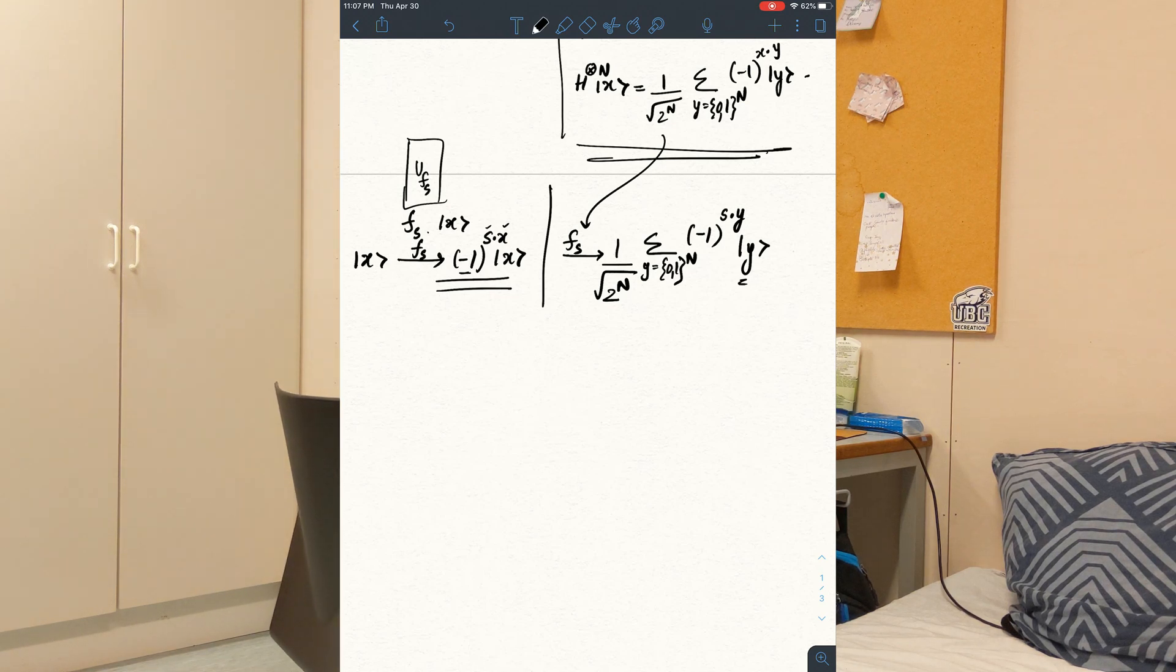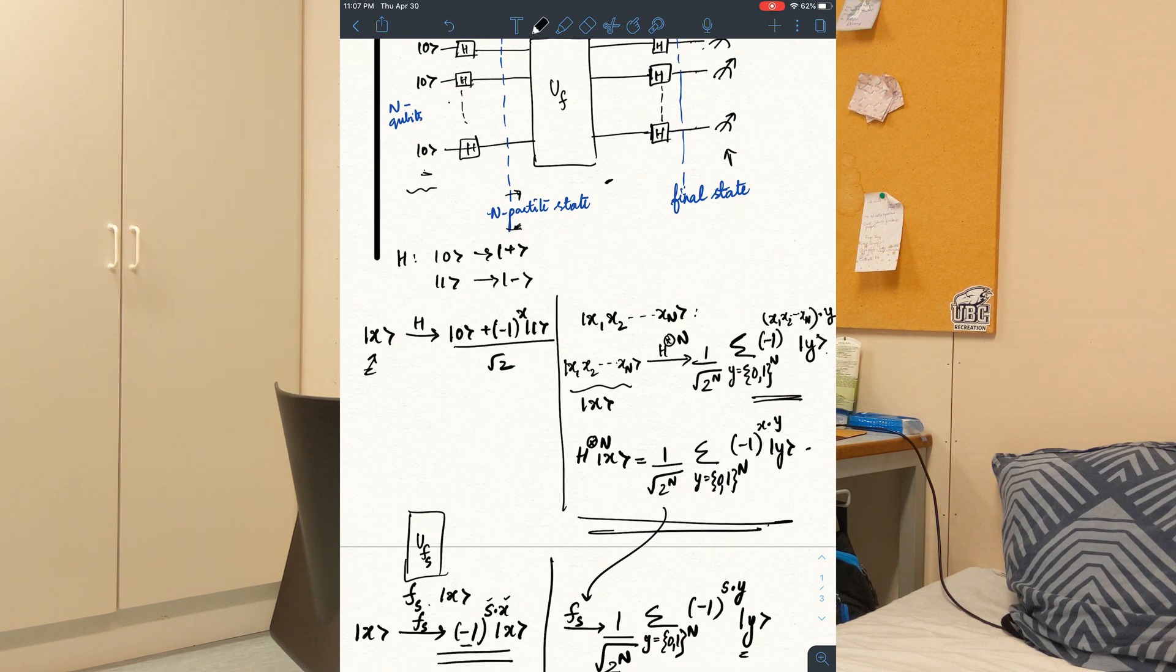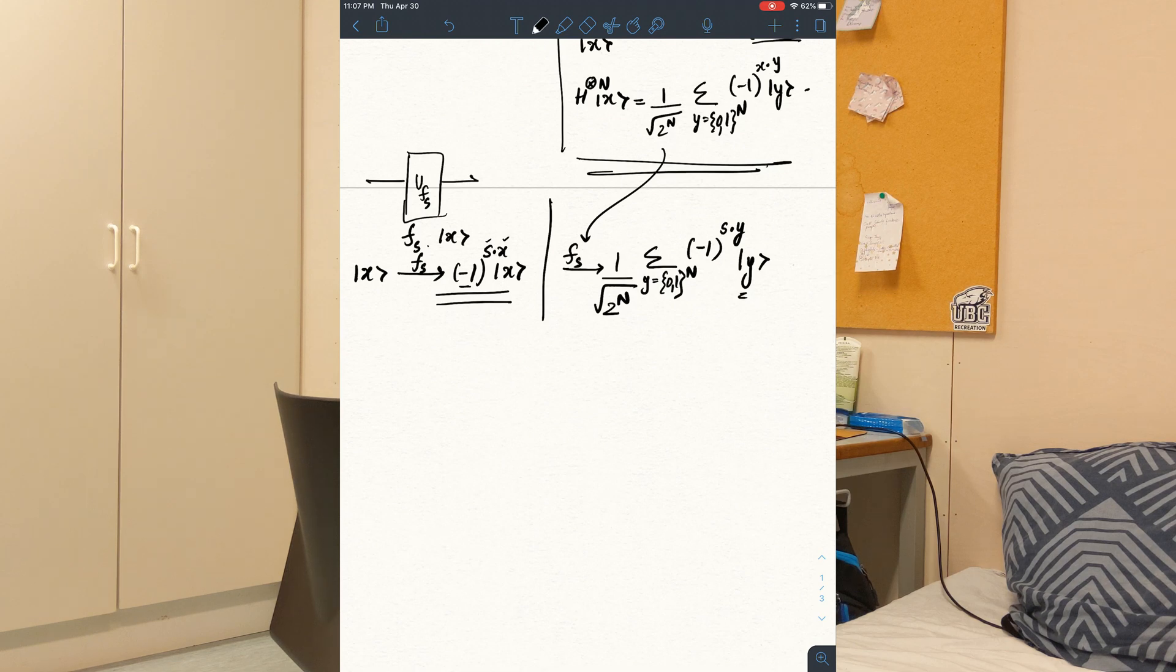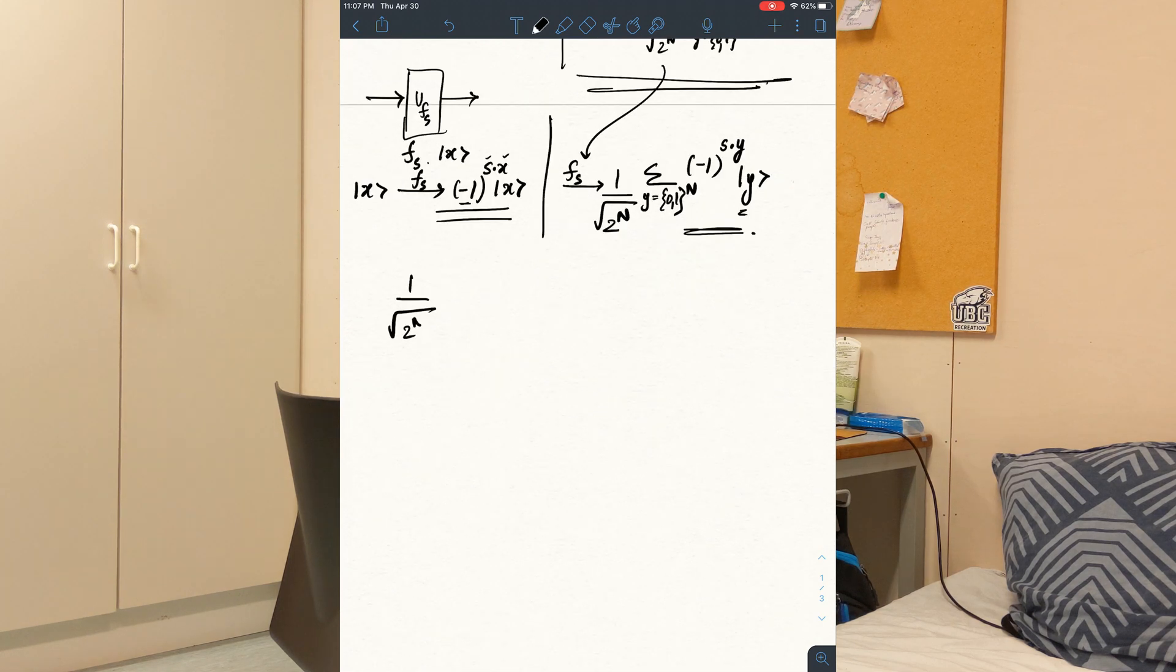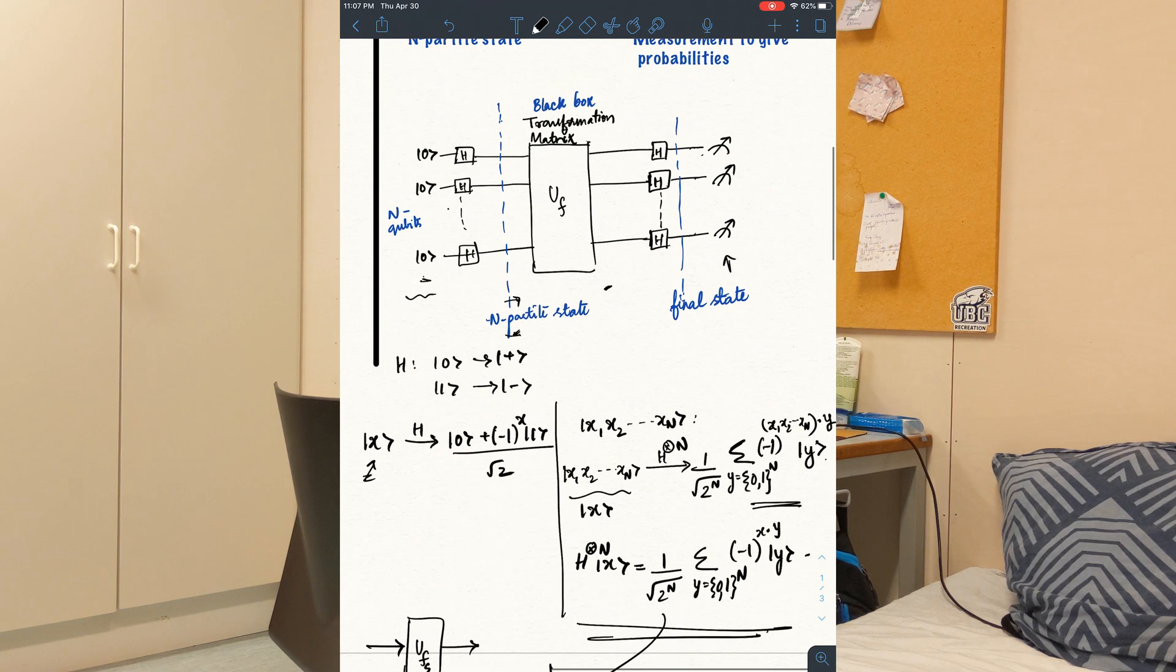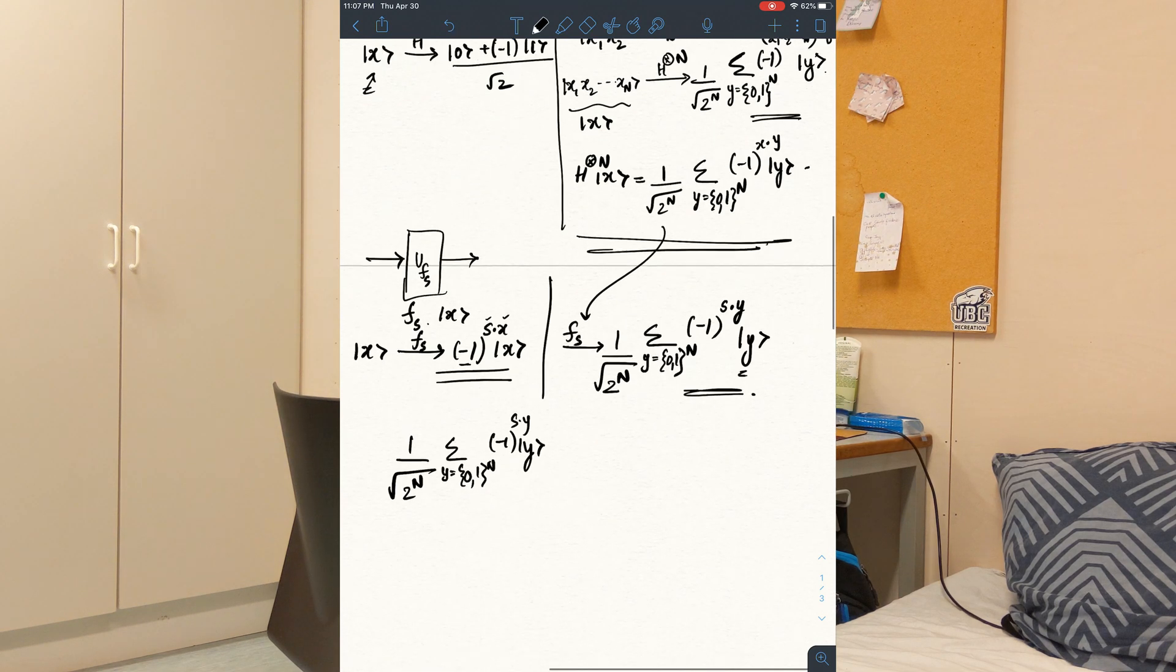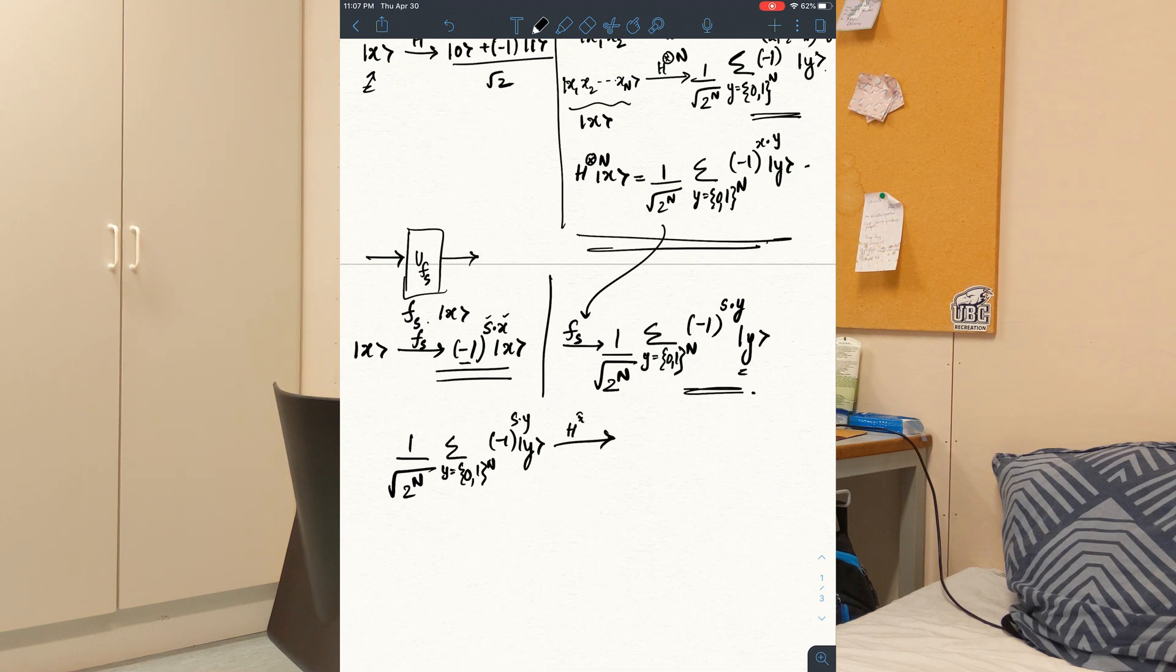This is at the end of the unitary transformation that we have. This is the state that we have just before we apply the Hadamard gates. Now when we apply these Hadamard gates again, we will end up getting s, which is the secret key.